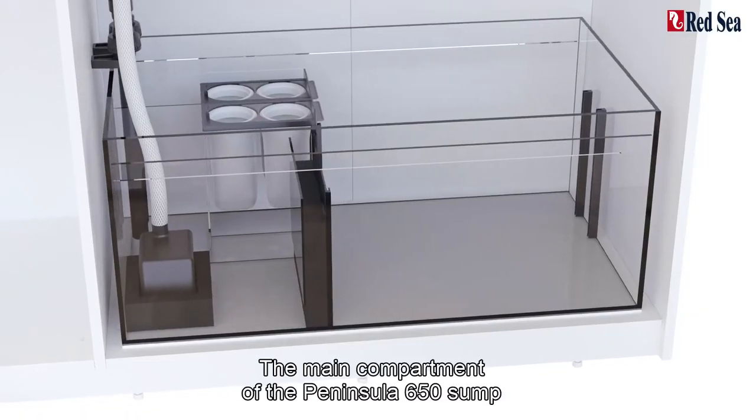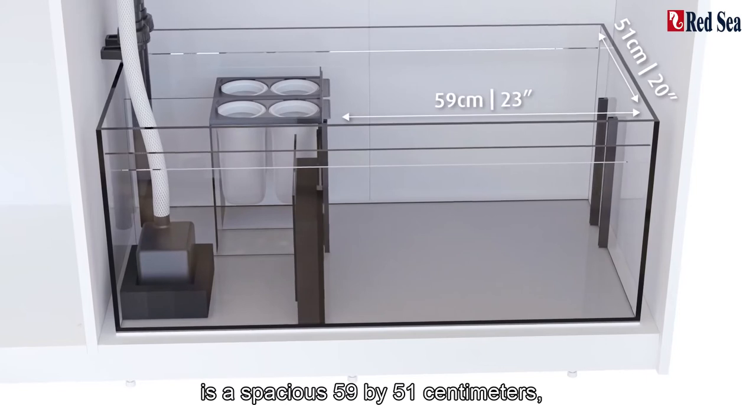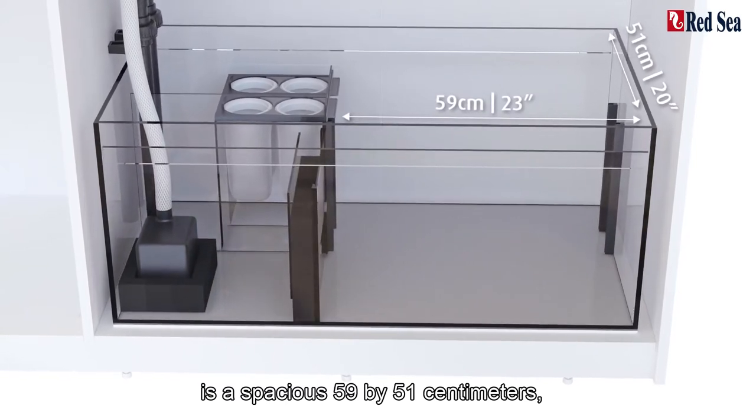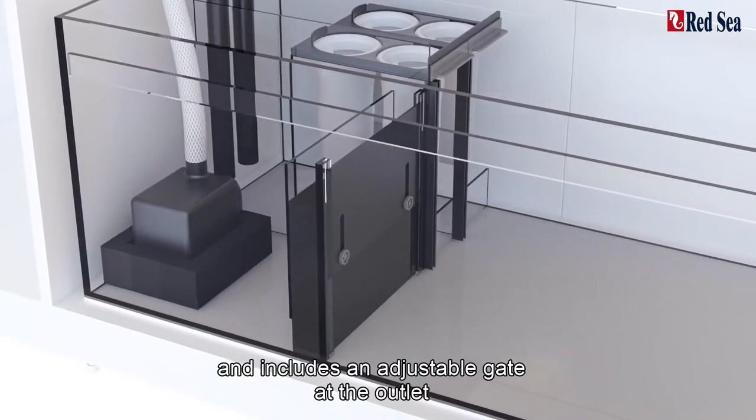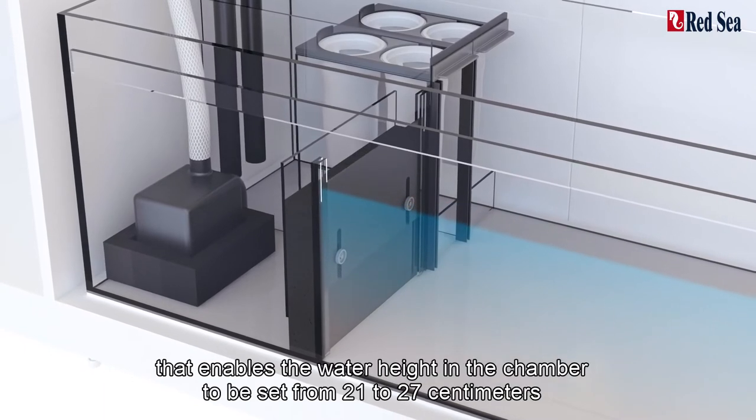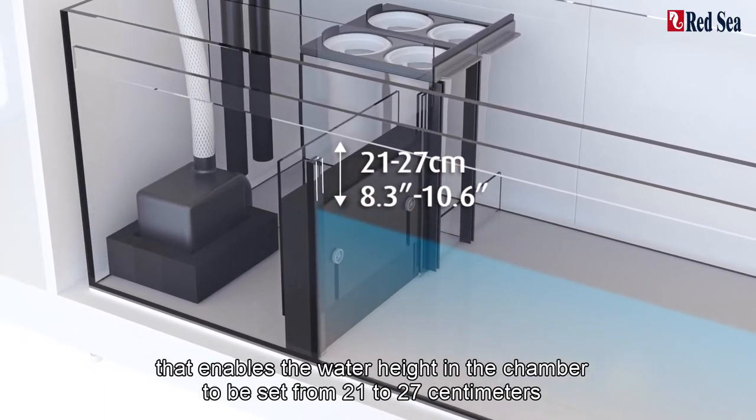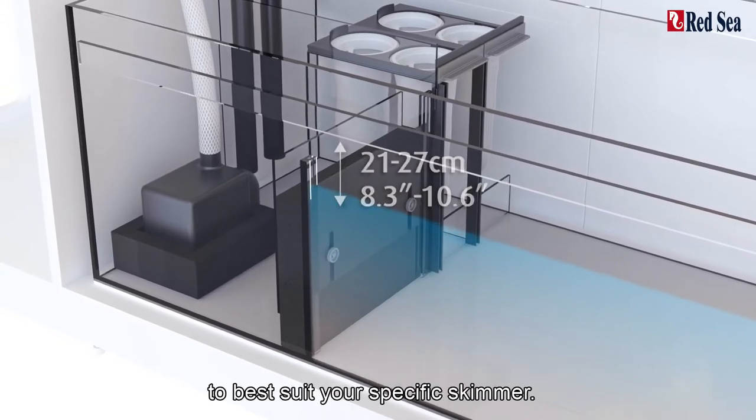The main compartment of the Peninsula 650 sump is a spacious 59 by 51 cm and includes an adjustable gate at the outlet that enables the water height in the chamber to be set from 21 to 27 cm to best suit your specific skimmer.